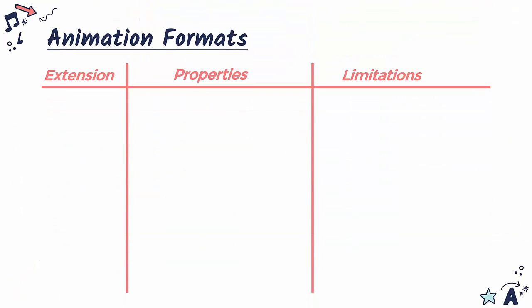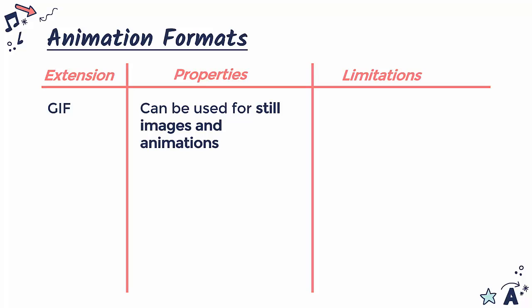Animations are slightly different to videos — animations don't have audio, whereas videos do, which requires a bit more data to be stored. A GIF is probably the best known animation format, and a GIF can actually be used for still images as well as animations. Originally a GIF was just designed for still images, but could also support multiple images in a sequence, which is really what an animation is. A GIF does store data losslessly — it doesn't delete any data — although it does try to rearrange it to make it more efficient, so there will be some reduction in file size, but the compression algorithm it uses is quite old and not very effective.